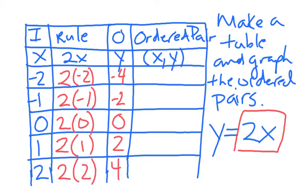So, there's our outputs. Now, we're going to write ordered pairs. Remember, in an ordered pair, x always comes first. And there's always parentheses.